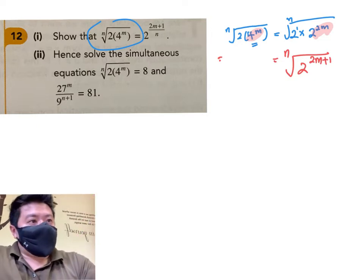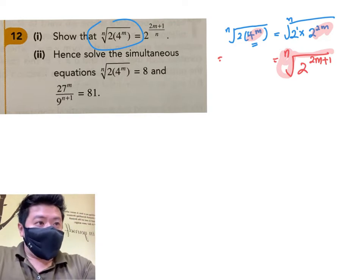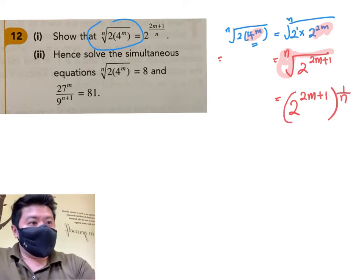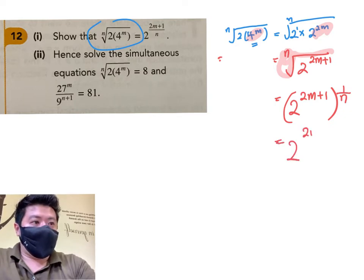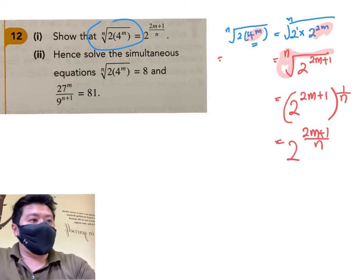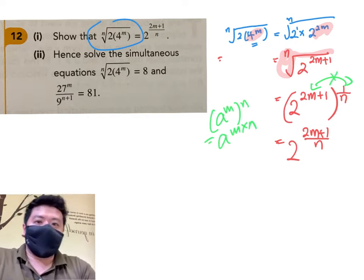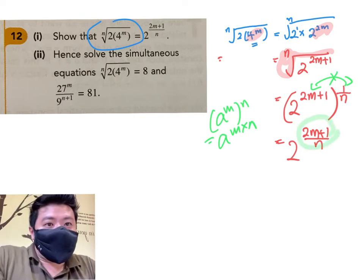Now next, let me deal with this n root. So remember, n root, n is outside, so we can say this is 2 to the power of 2m plus 1 to the power of 1 over n. Remember that when we take a to the power of m bracket, n outside is a to the power of m times n. That's why here they are related by times, and therefore I got a fraction here.